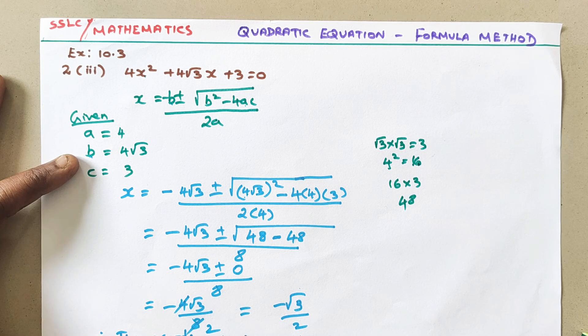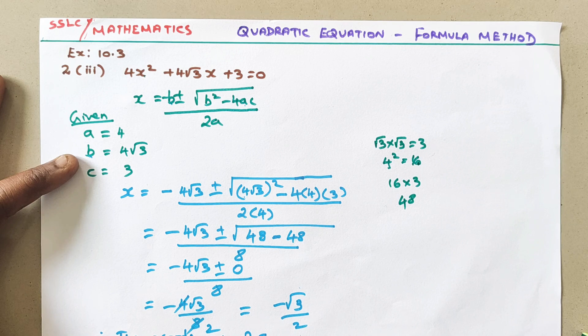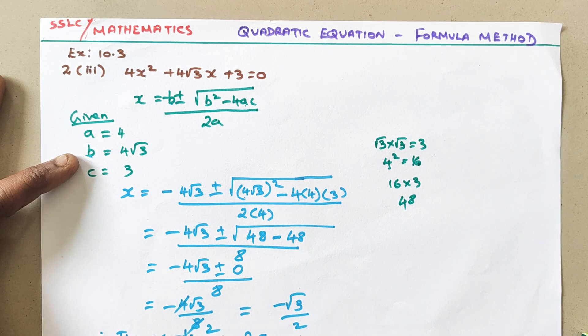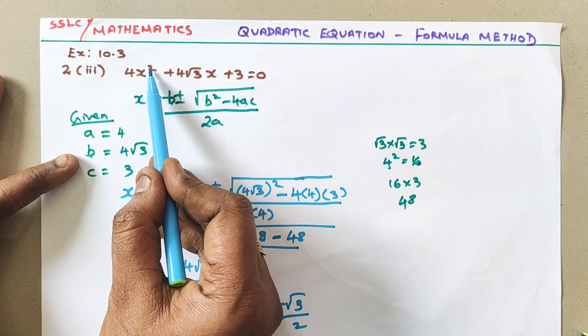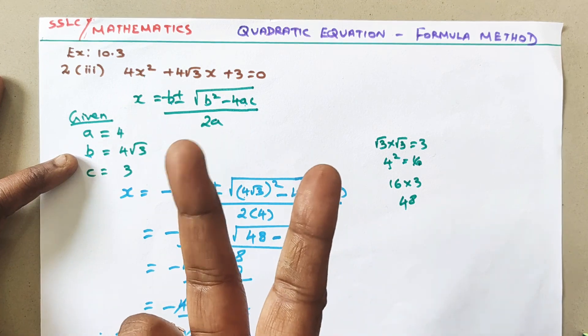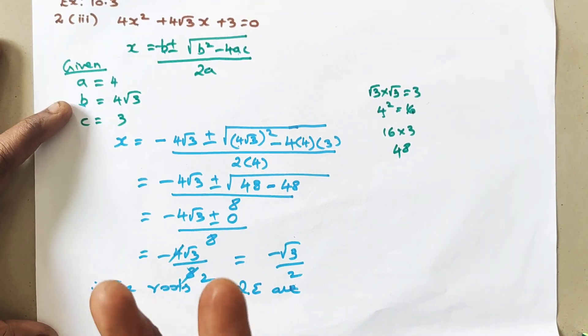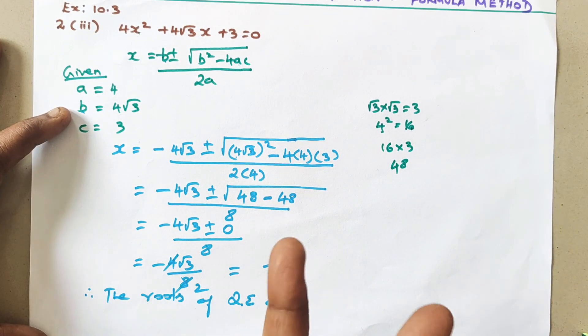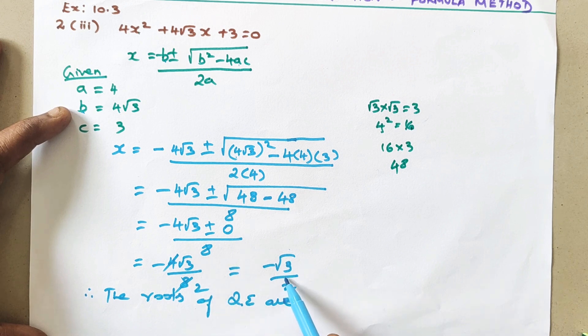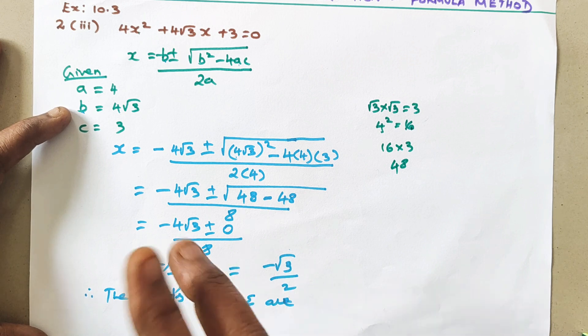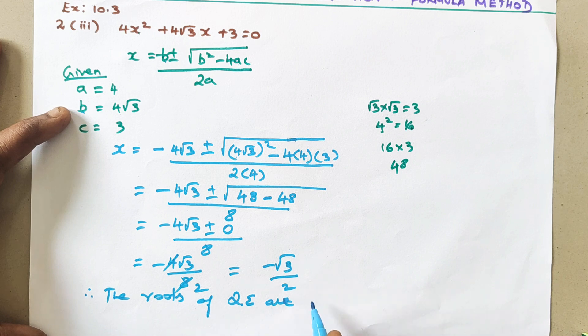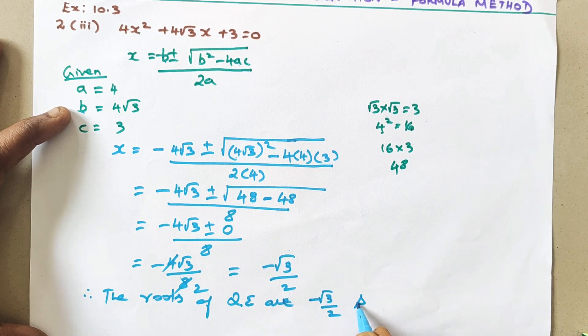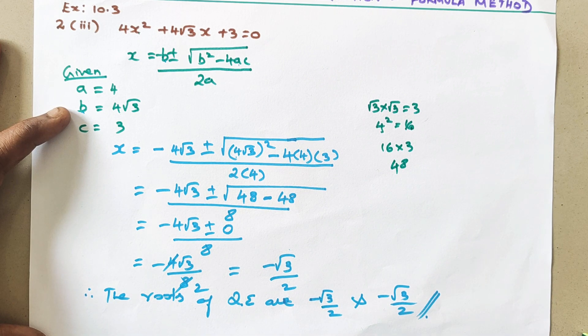If the degree is 2, how many answer you should get? Two answers. That is, x value should be two numbers. But here only one number we are getting. That means both the numbers are the same. That is -√3/2 and -√3/2. Is it clear children?